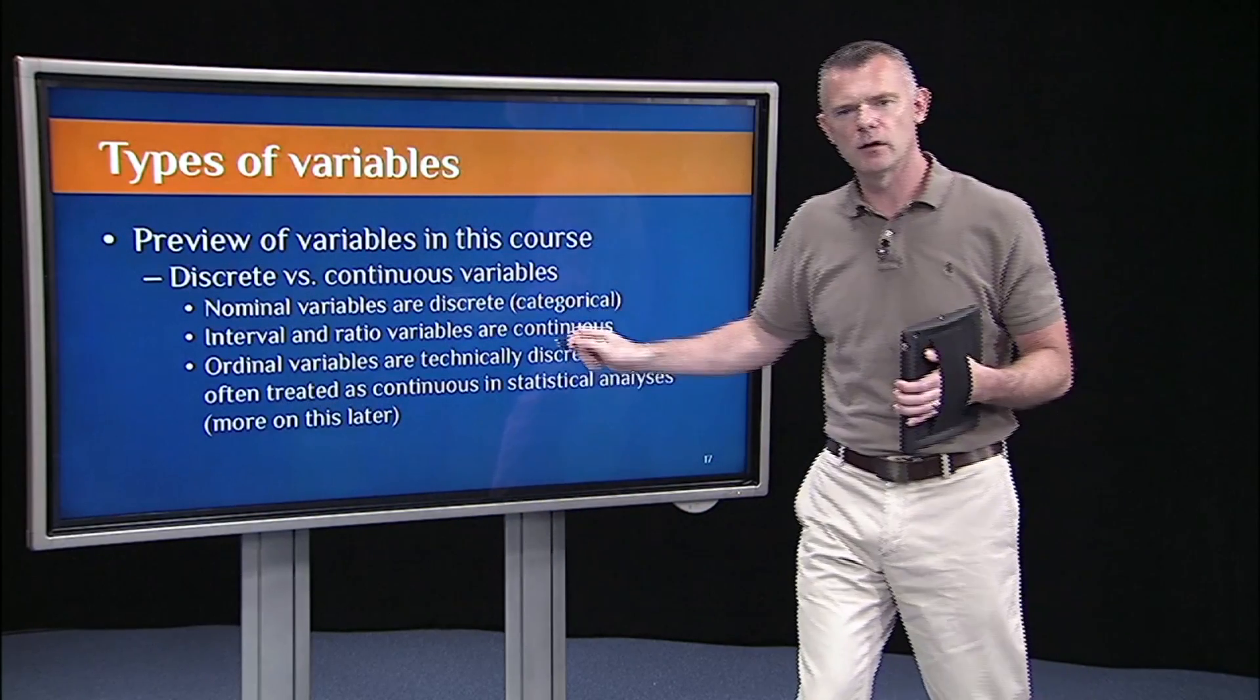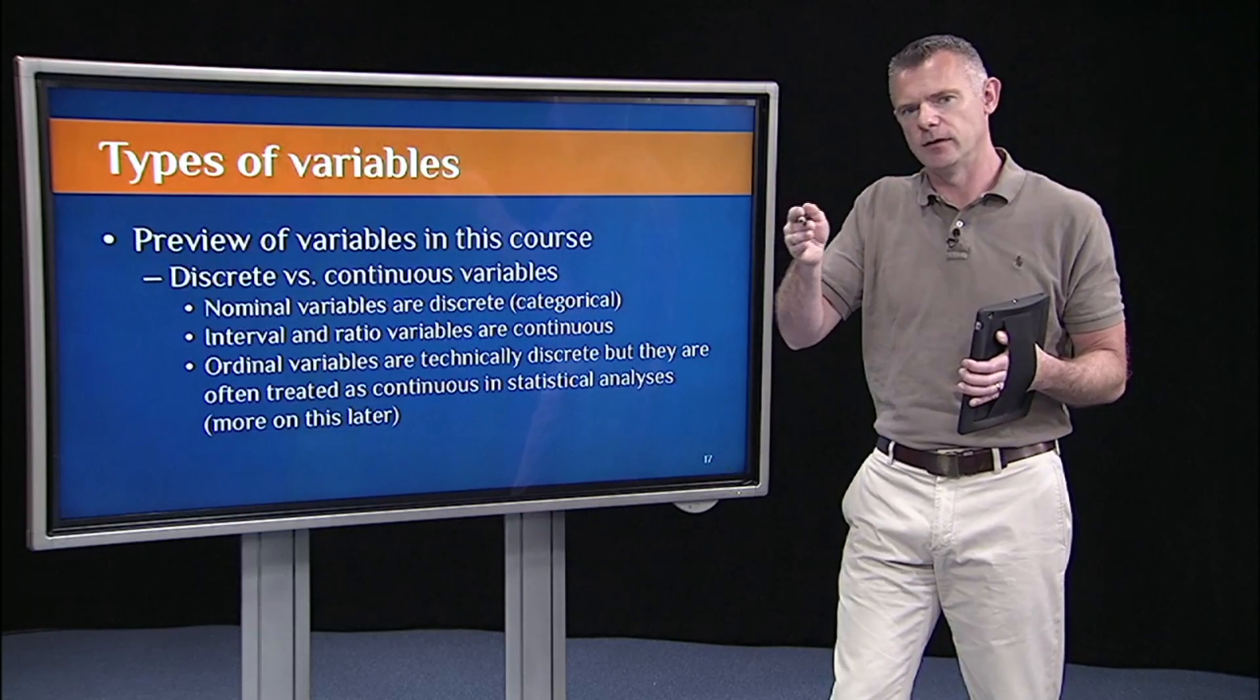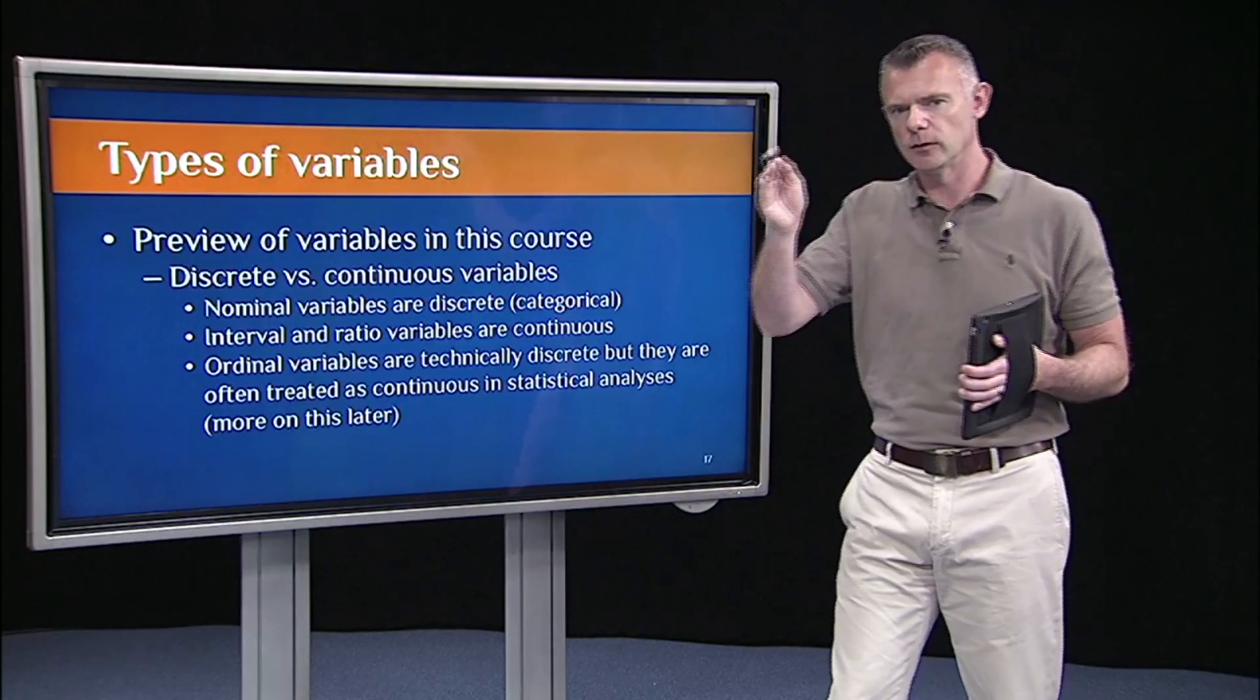Ordinal variables are a little tricky. They're technically categories, right? If I only have, say, first, second, and third. Gold, silver, bronze.